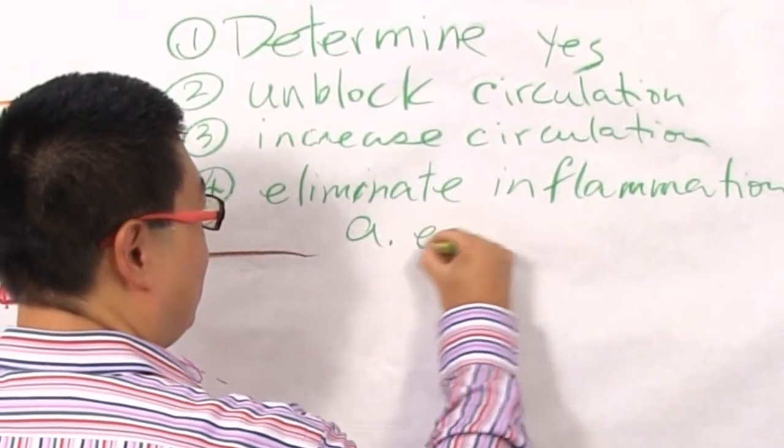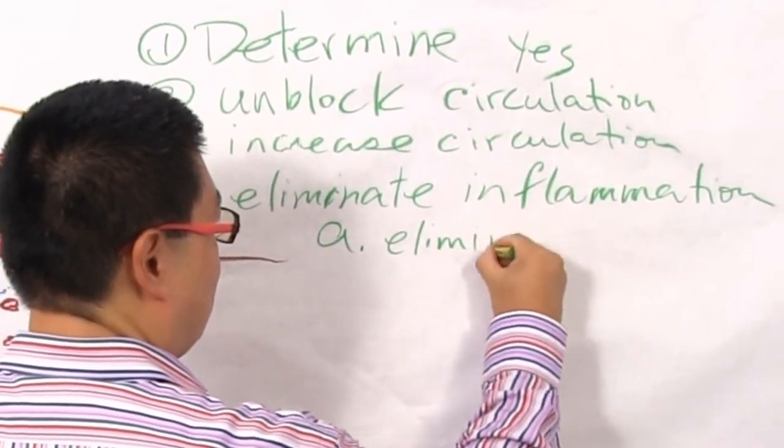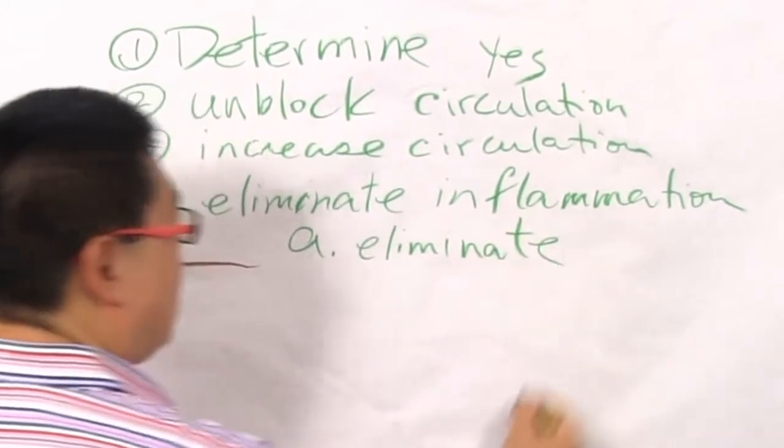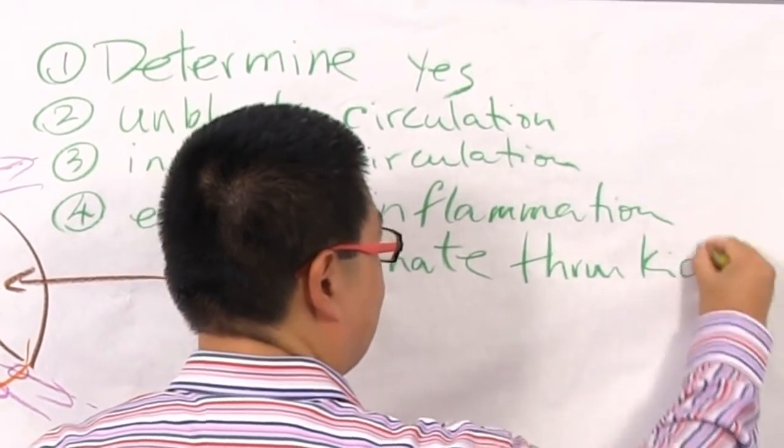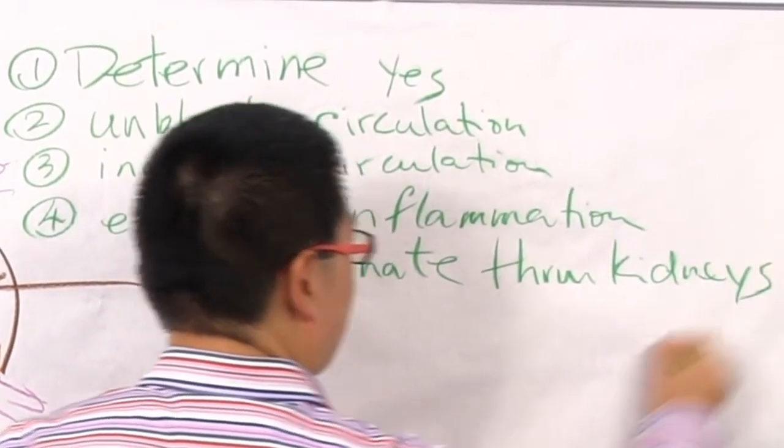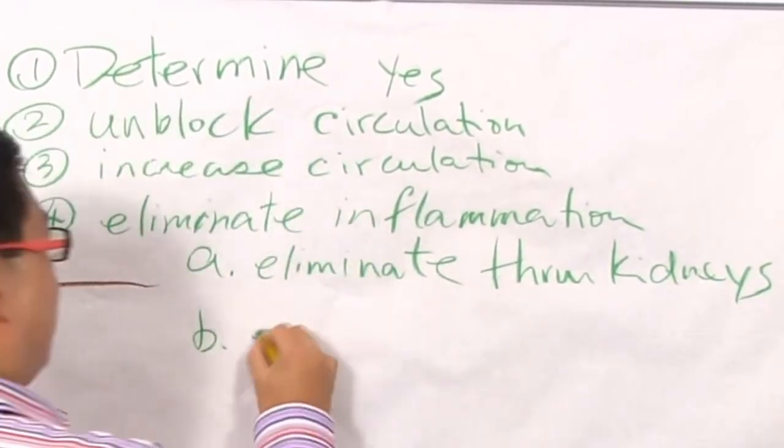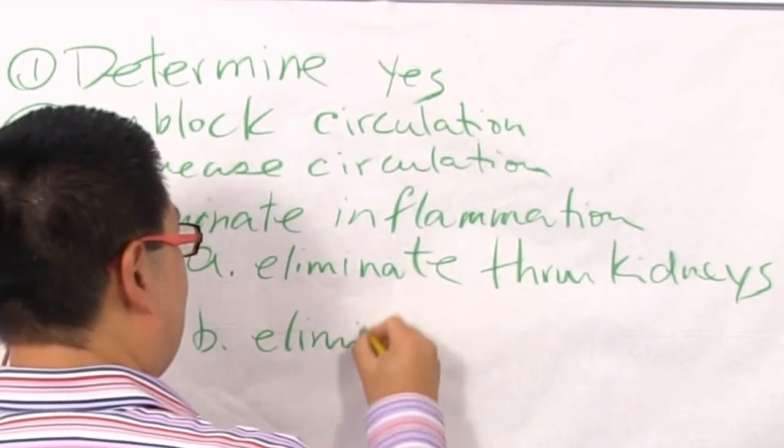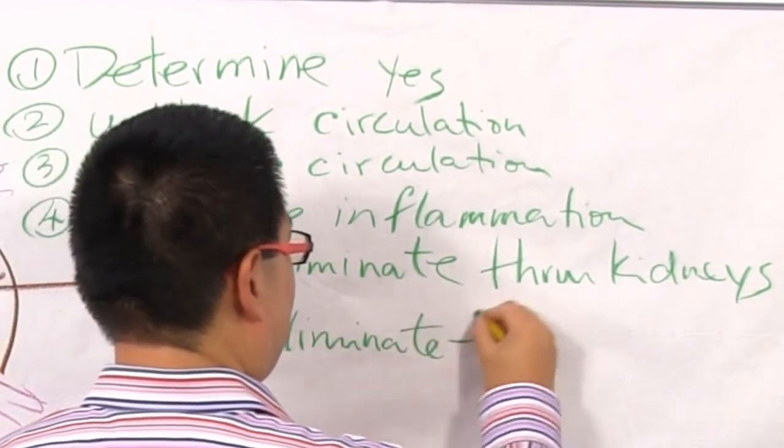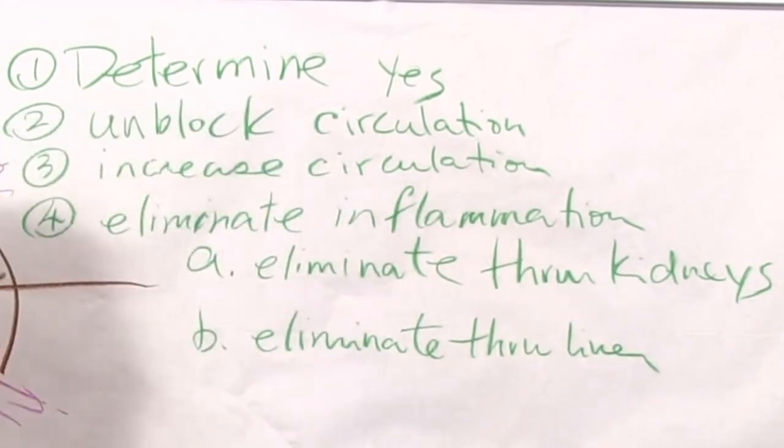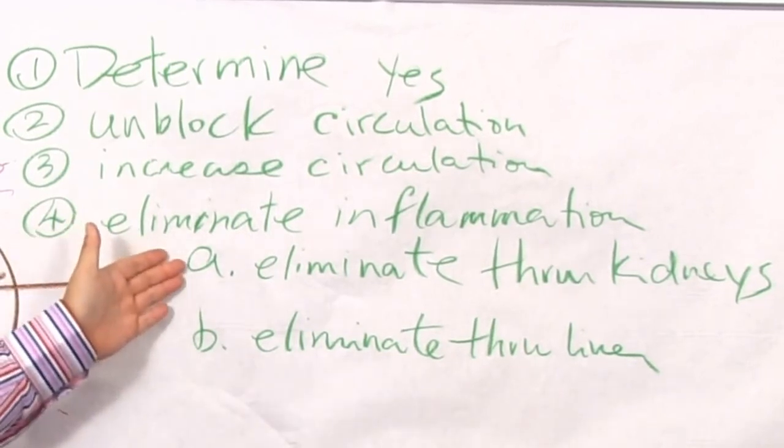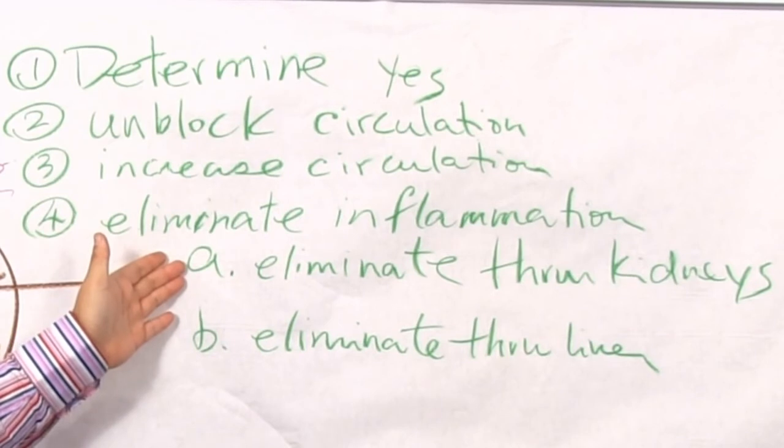This part here has actually two parts. We eliminate through kidneys. And we eliminate through liver. Now during this process, during these two parts, they're actually individual steps. You eliminate inflammation through the kidneys first.